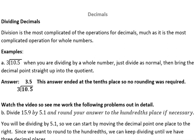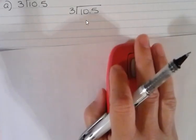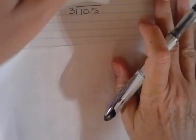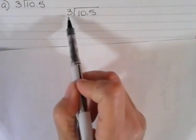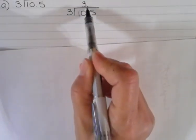In the first example, we don't have a divisor that's a decimal number. Our divisor is a whole number and that's the easiest type. When we have that, we're just going to divide like we would normally and then bring the decimal point straight up into the answer. So 3 goes into 10 3 times. We're going to bring that decimal point straight up.